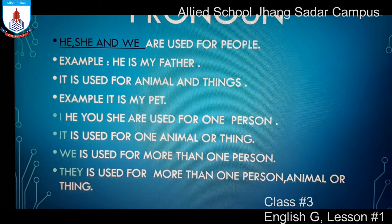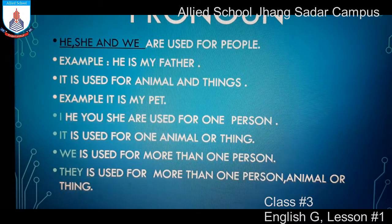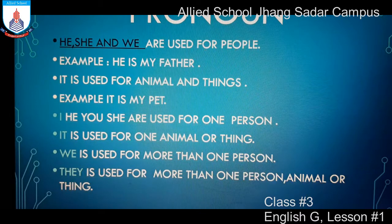Example: It is my pet. I, he, you, she are used for one person. Yaani, yeh tamam pronoun hum single person ke liye use karte hain. It is used for one animal or thing. We is used for more than one person. They is used for more than one person, animal, or thing. They ko hum ek se zyada person, animal, or cheez ke liye istemal karte hain.